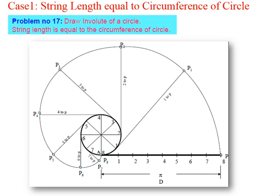What do we mean by involute? An involute is a curve generated by the end of a piece of thread whenever that thread is unwound from a rounded object or a circle. Whatever path is traced by the end point of that thread is the involute. Here the circle is used for winding the thread or string. If it is a triangle, it is the involute of a triangle; if it is a square, it is the involute of a square.